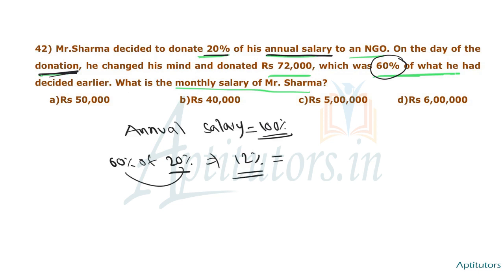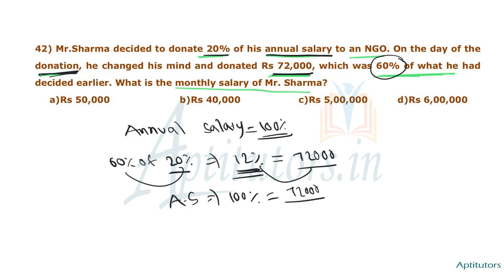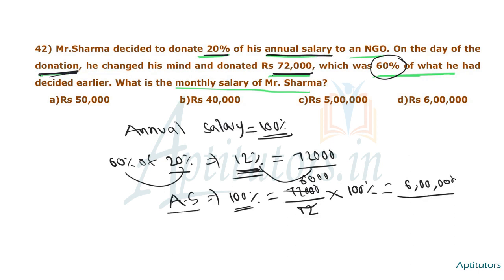The annual salary is such that 12% equals 72,000 rupees. So, 1% equals 72,000 divided by 12. Therefore, 100% — the annual salary — equals 6,00,000 rupees.